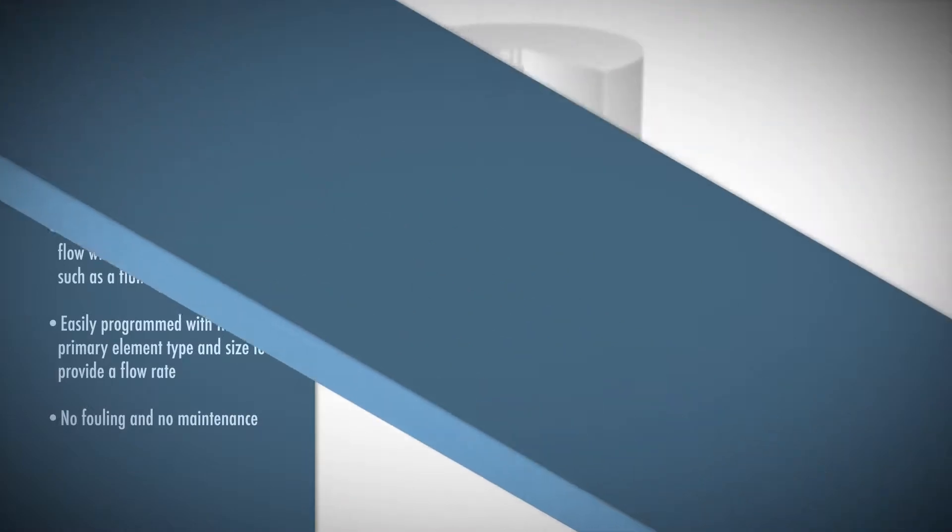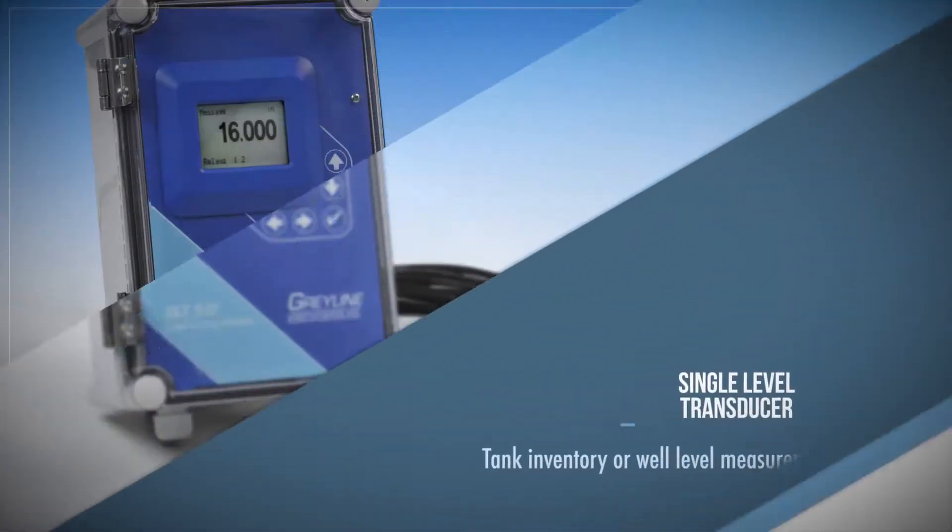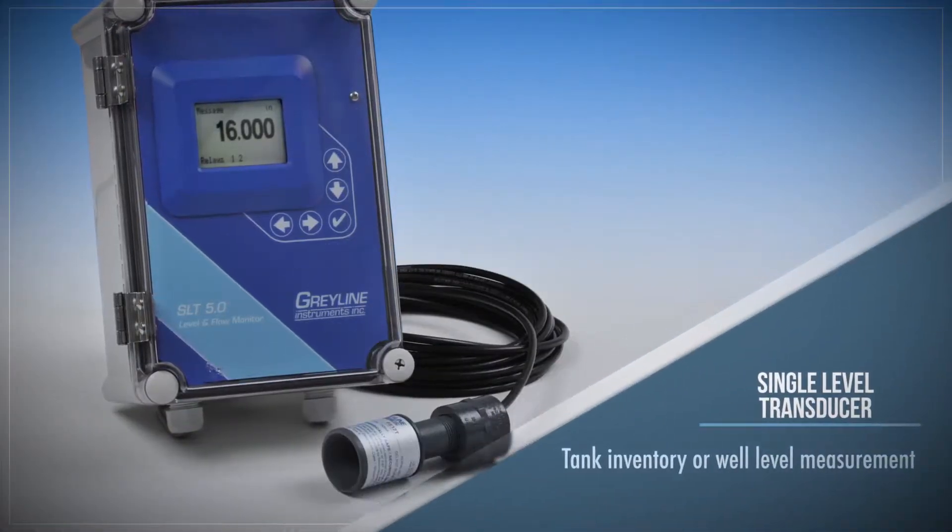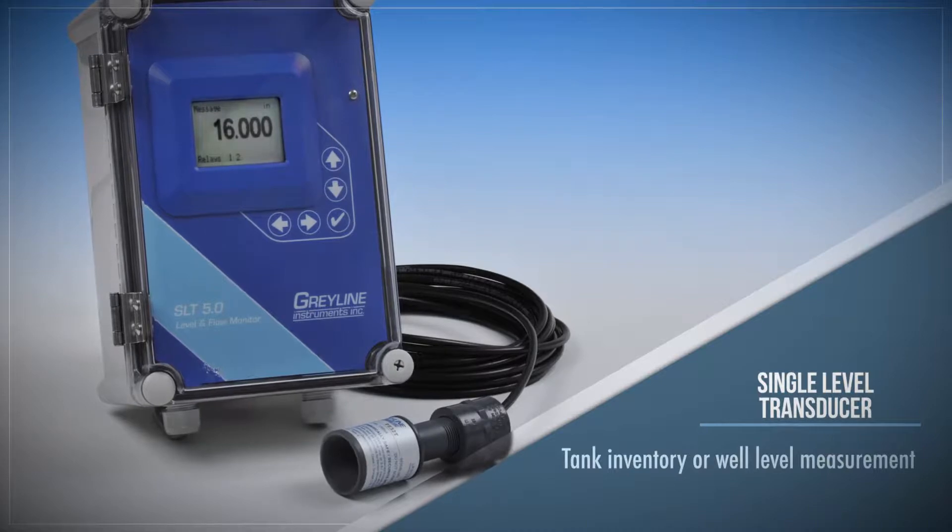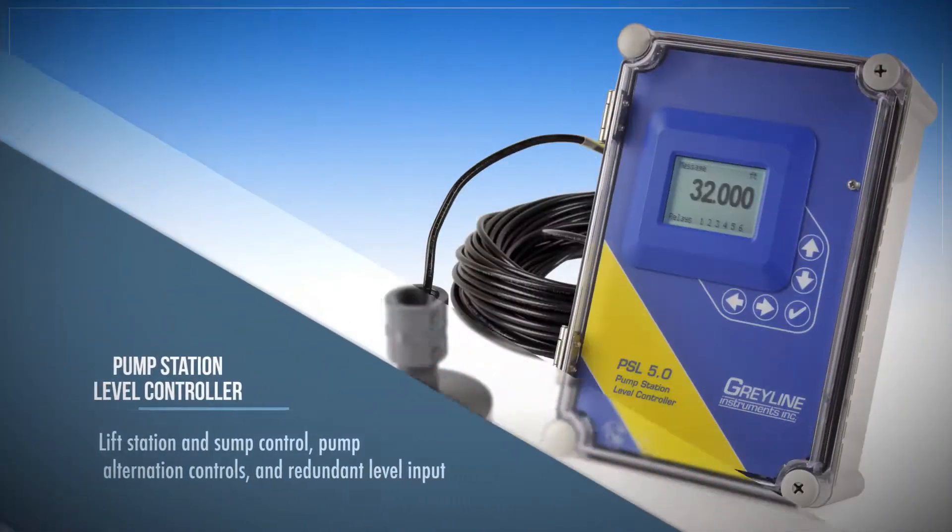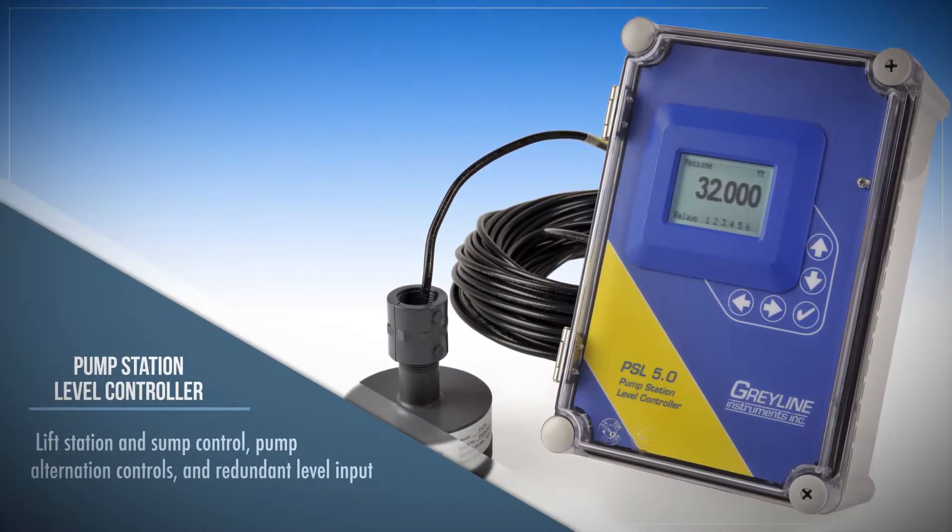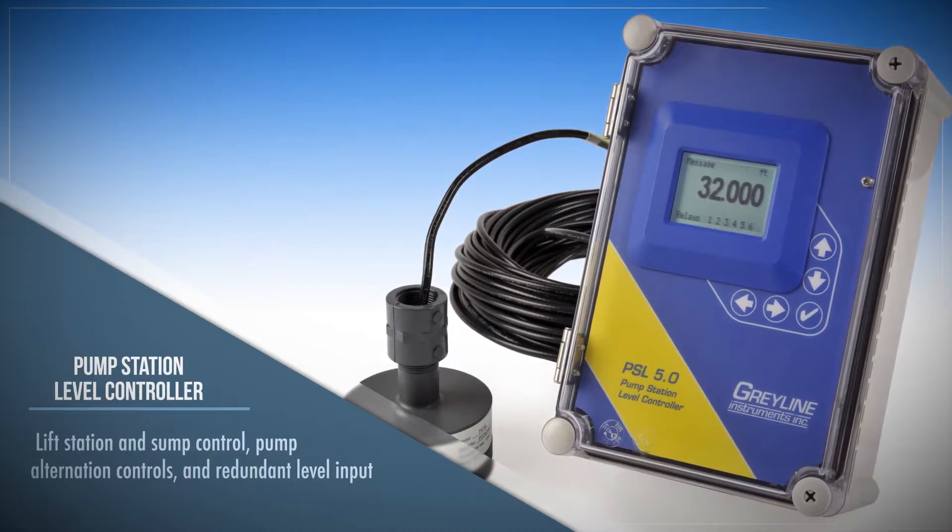Grayline's ultrasonic level technology can also be used for a variety of continuous level monitoring and control applications. Use the SLT 5.0 single level transmitter product for tank inventory or well level, lift station and sump control, pump alternation controls, and redundant level input from any 4020 milliamp device is possible with the pump station level controller.